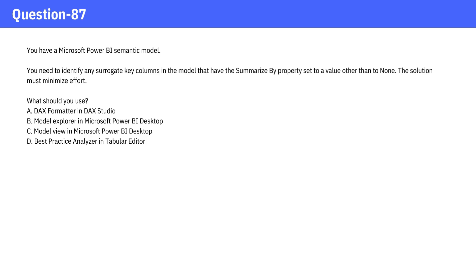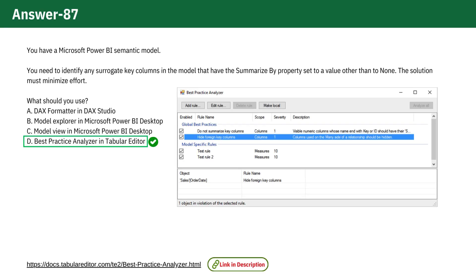The correct answer is D: Best Practice Analyzer in Tabular Editor. This tool is specifically designed to automatically check your Power BI model against best practices, including identifying any surrogate key columns with the Summarize by Property set to something other than none. It efficiently pinpoints potential issues in your model, saving you the effort of manually inspecting each column.